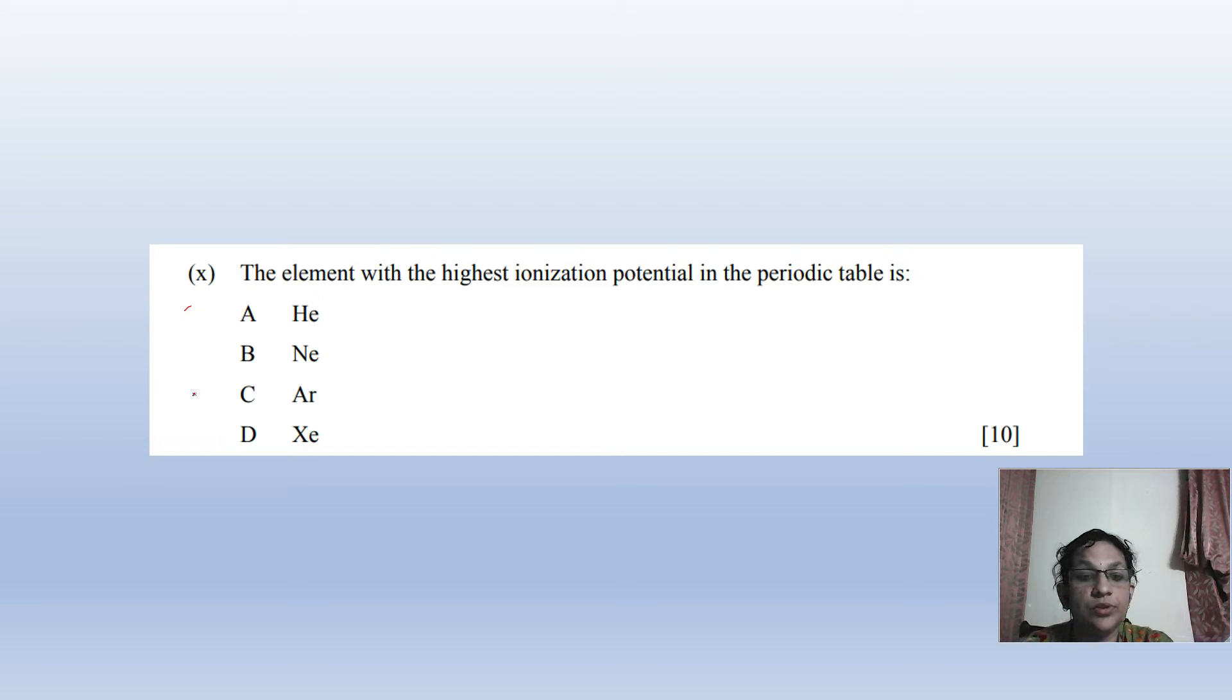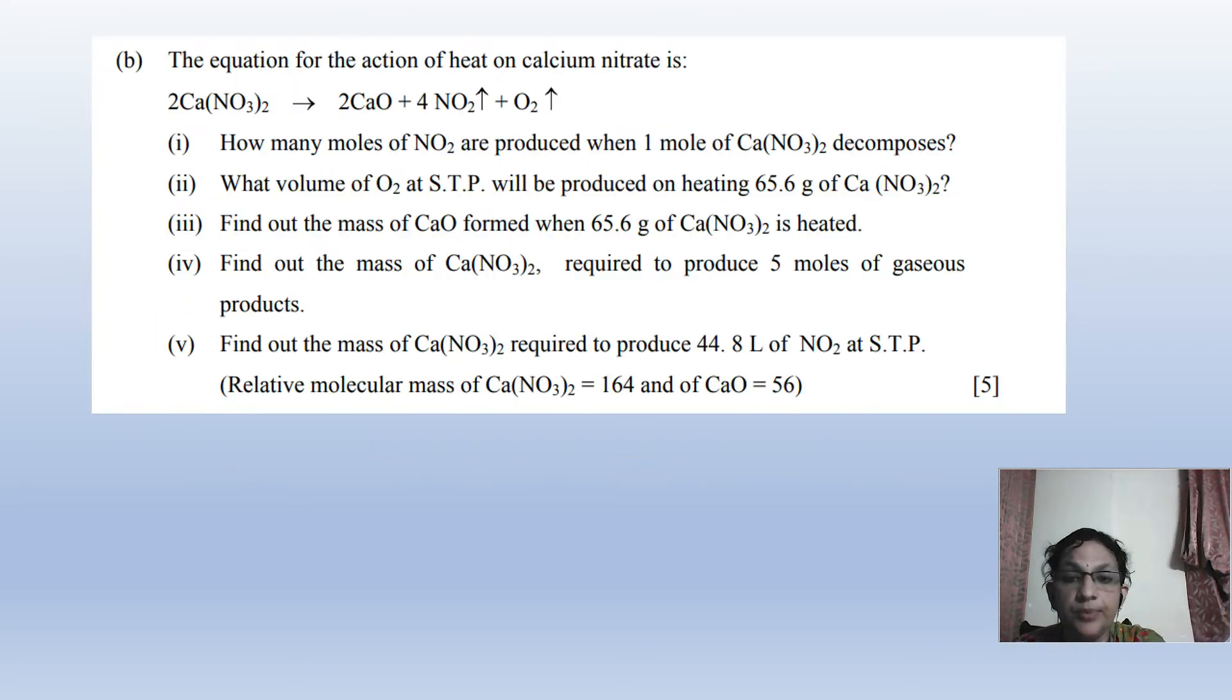Then there are periodic properties questions in that chapter. How is the ionization potential when we are rising and moving left and right in the periodic table? Then you have to write reactions. Since you are in class 10, you have to learn balancing - the left and right number of atoms should be equal. Practice this: calcium nitrate to calcium oxide, NO2, and oxygen.